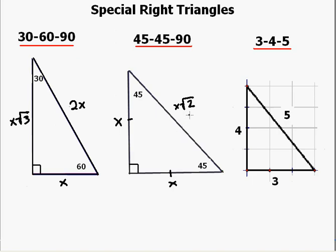In the 3-4-5 right triangle, any time one leg has a length of 3 or some multiple of 3, and the other longer leg has a length of 4 or some multiple of 4, then the hypotenuse will always have a length of 5 or some multiple of 5.